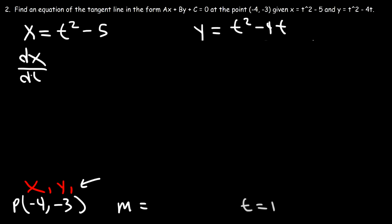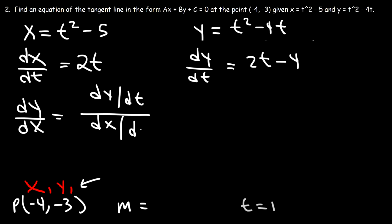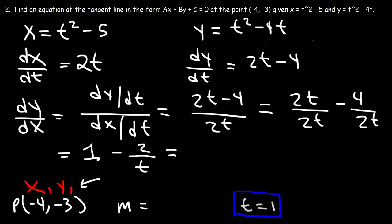Let's find dx/dt: the derivative of t squared minus 5 is 2t. For dy/dt, the derivative of t squared is 2t and the derivative of negative 4t is negative 4. So dy/dx equals dy/dt divided by dx/dt, which is 2t minus 4 over 2t. Separating the fraction: 2t over 2t minus 4 over 2t gives 1 minus 2 over t. Plugging in t equals 1: 1 minus 2 over 1 equals 1 minus 2, which is negative 1. So the slope of the tangent line is negative 1.